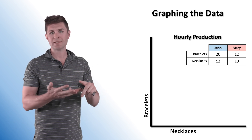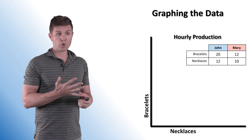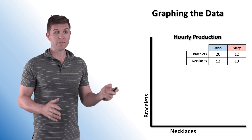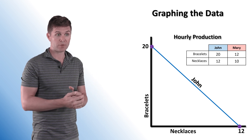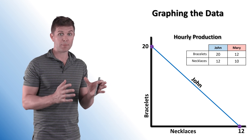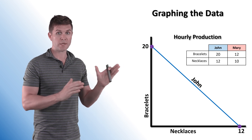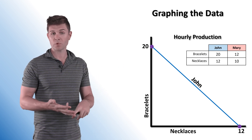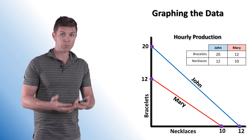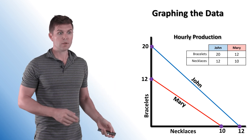Now remember, this can be replaced with daily, monthly, or whatever it is, but we are looking at items that are being produced. John can produce 20 bracelets or 12 necklaces — those are his extremes on both ends. On the production possibility frontier graph, that's the 20 bracelets and 12 necklaces — there's our PPF. We can produce any combination in between, but the table gives us just the extremes. Now Mary can produce 12 bracelets or 10 necklaces, so we throw that up on the graph.